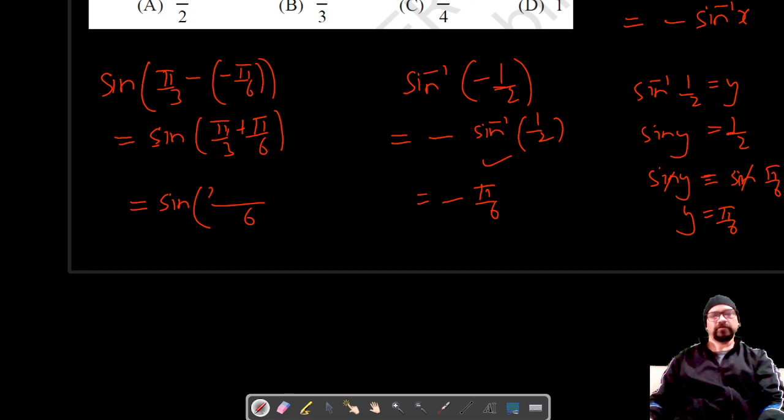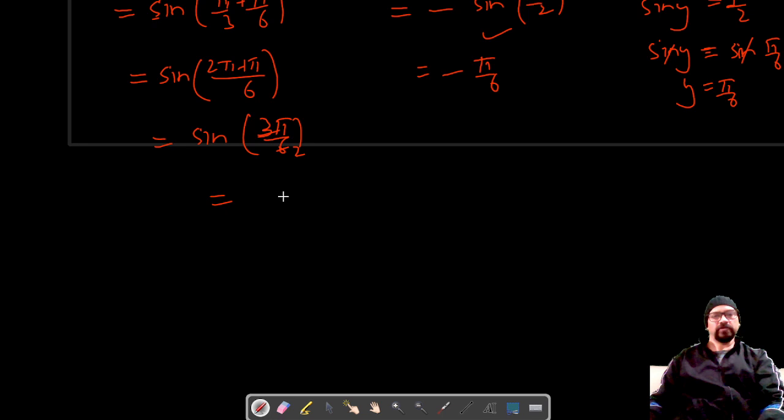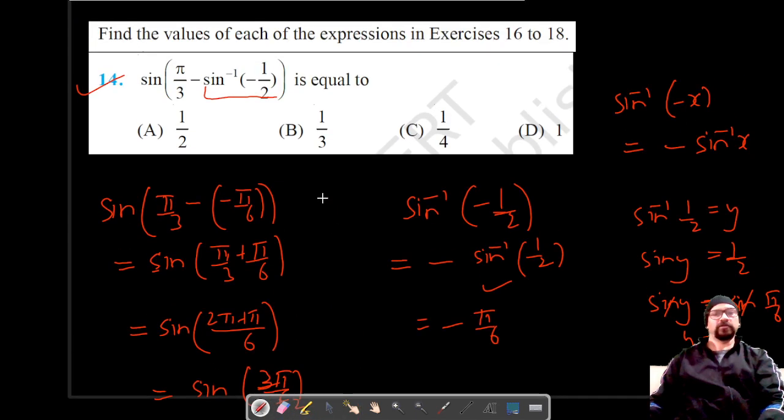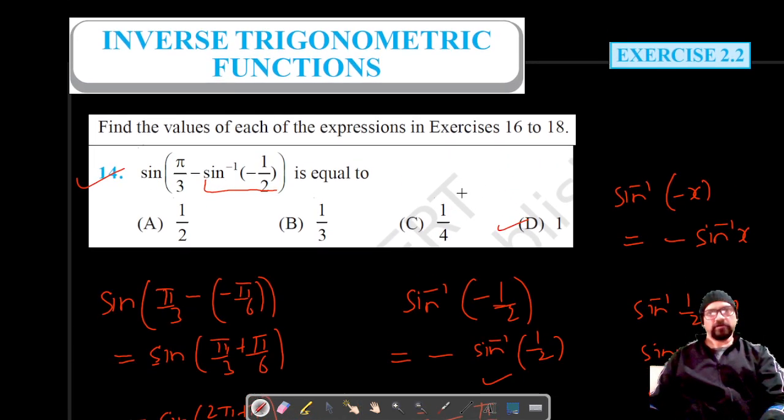This gives us sine of π by 2, which equals 1, so our option is option D.